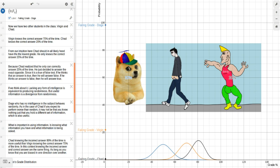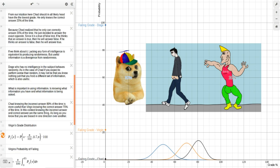The wrong answer. What is useful in information is knowing what information you have and what information is being asked. Chad knowing the incorrect answer 80% of the time is more useful than Virgin knowing the correct answer 70% of the time. In this context, knowing the incorrect answer and the correct answer are the same thing, as long as you know that you are biased in one direction over the other.